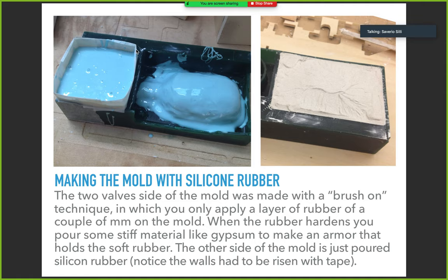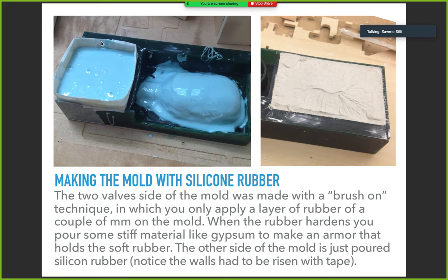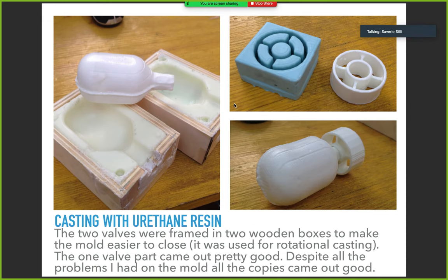I also didn't leave enough space above the model for the silicone rubber, so I had to create side walls with masking tape. Running out of rubber, I made only a thin one-layer glove of rubber and then made a plaster armor to contain it — a technique to save rubber material: make a flexible rubber glove and then a rigid, cheaper armor around it. The registration keys also didn't come out well.